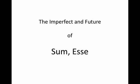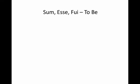Today we're going to learn about the imperfect and the future tense of the verb sum, esse, fui — to be.